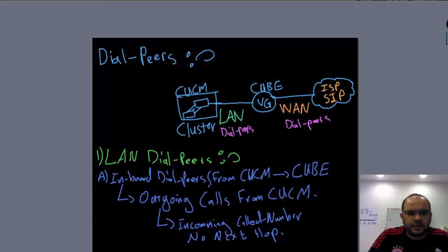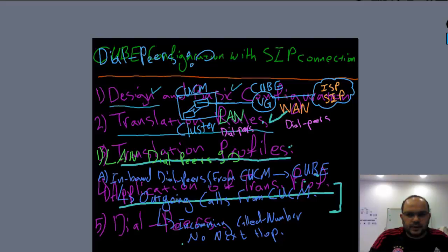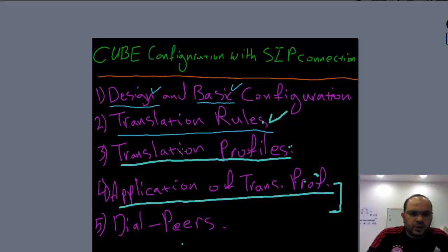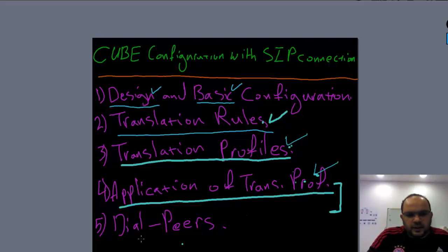Hi guys, how are you? I'm so glad to see you again with the new part. This is Part 4 and it's actually the last topic in our tutorial about CUBE configuration with SIP connection. We have already covered basic configuration, translation rules, translation profiles, and application of translation profiles. The last remaining topic is dial peers, so in this part of the video we are going to talk about dial peers.